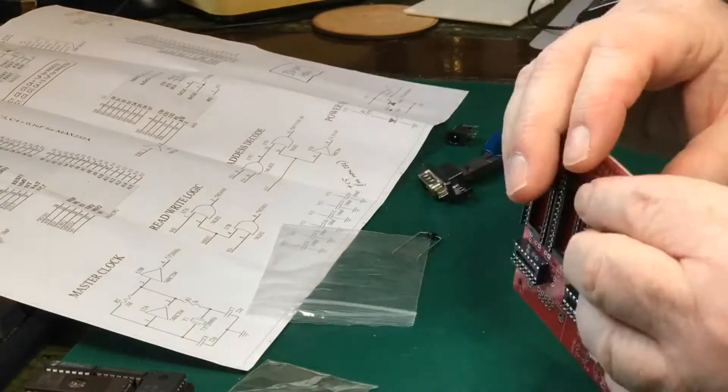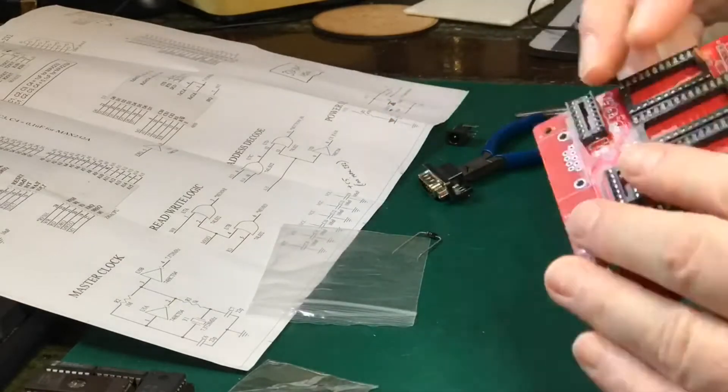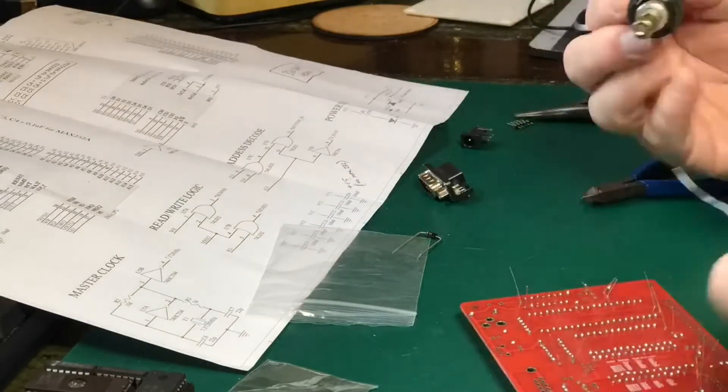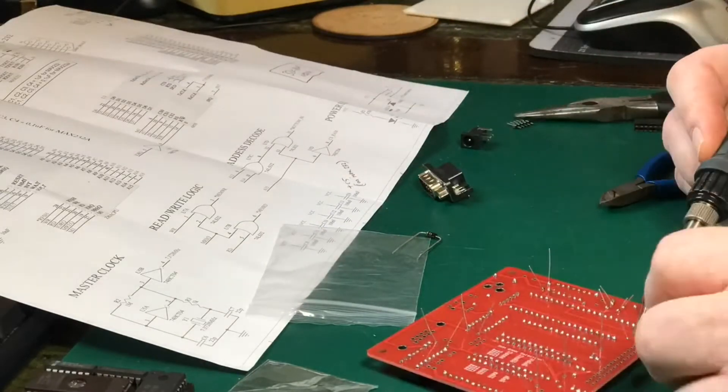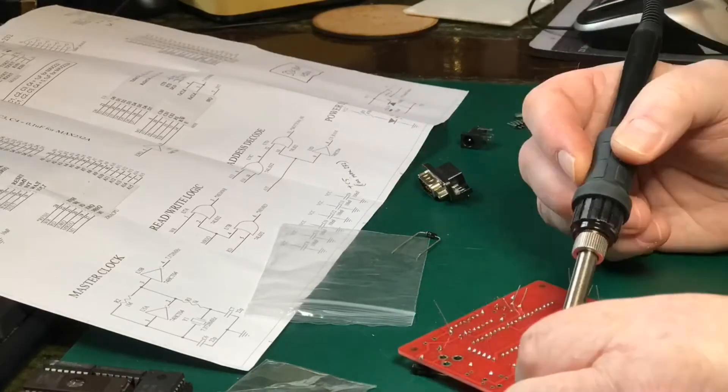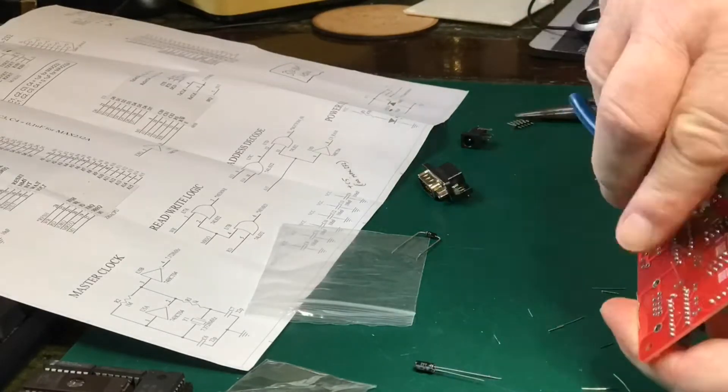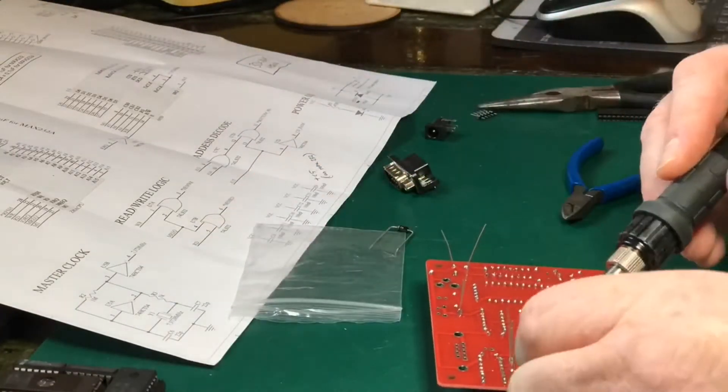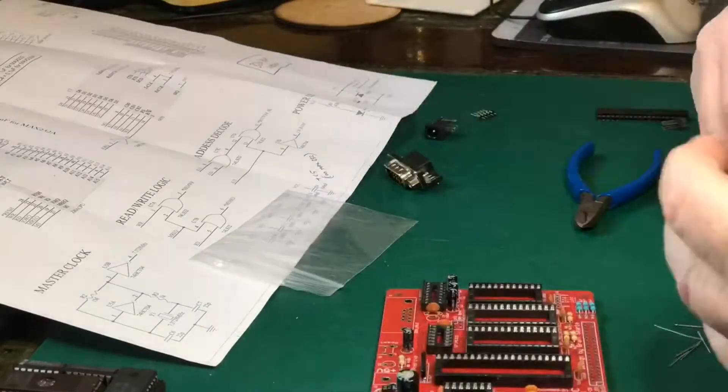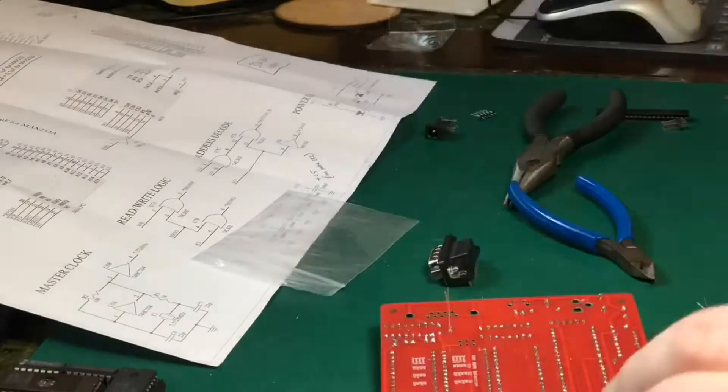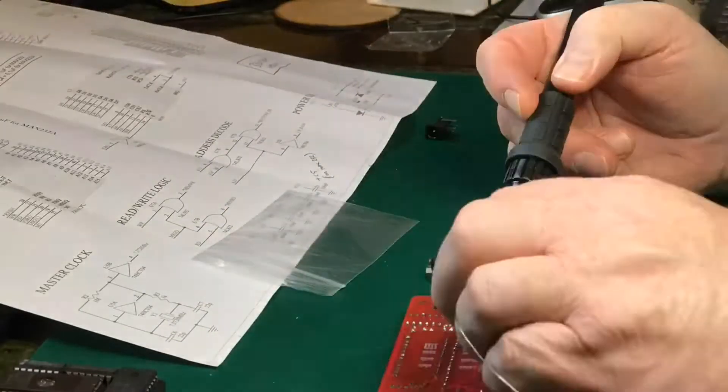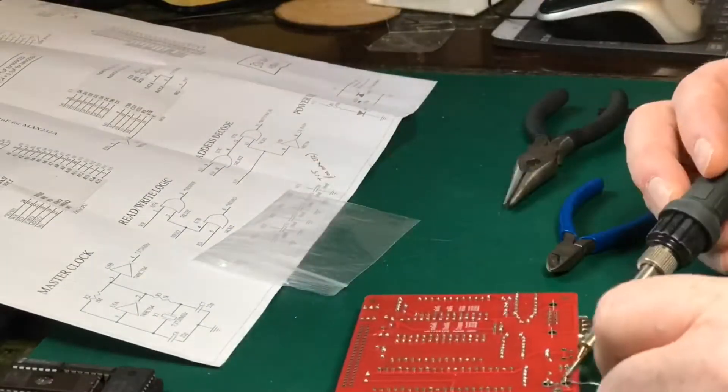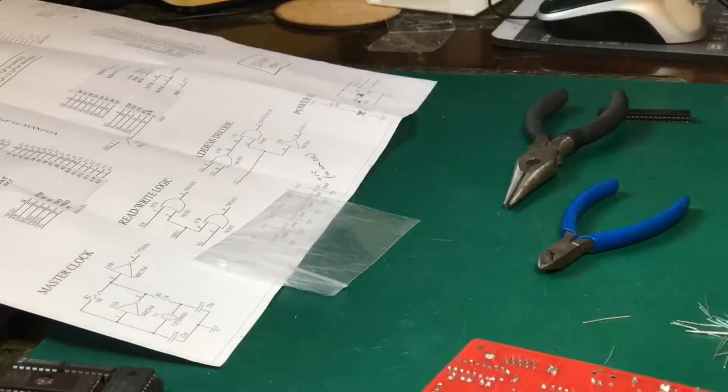Now we resume by putting the decoupling capacitors on - one pretty much associated with every chip on the board, 100nF caps. Fairly quick to solder on. There's a few of them but not too many, not as many as the IC sockets. Once we've done that we can move on. Find the electrolytics, making sure of course to get them the right way around with the negative marked with a bar on the can. Then we'll fit the next bits of hardware - the D9 connector for the serial port and the jack socket for the power.